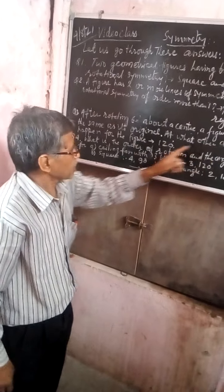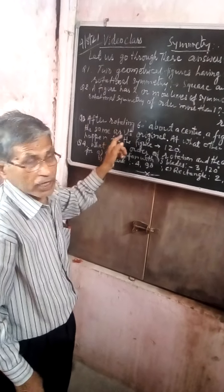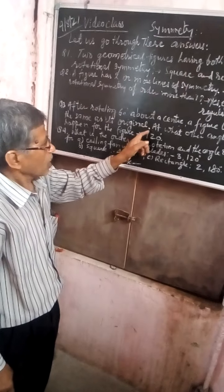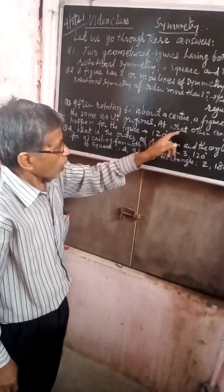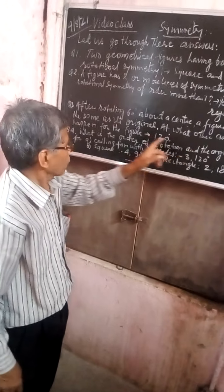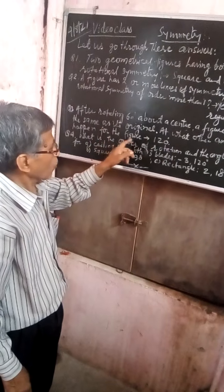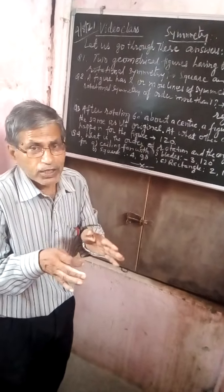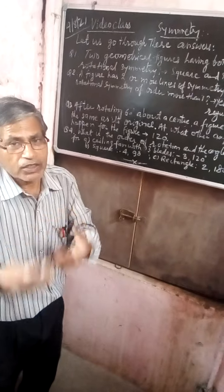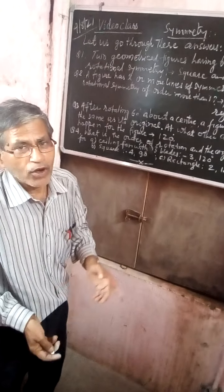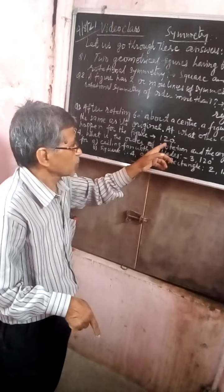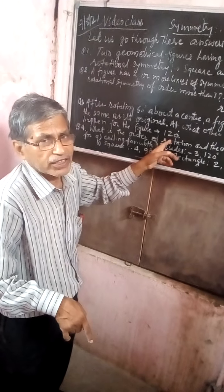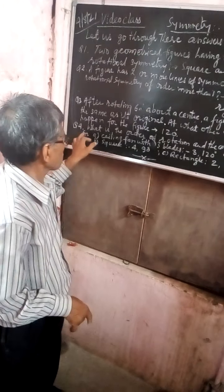Now let us see another question. After rotating 60 degrees about the center, a figure looks exactly the same as its original. At what other angle will this happen for the figure? If it happens for 60 degrees, next it will happen for 120 degrees. So your answer is 120 degrees.